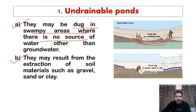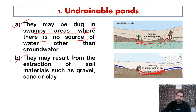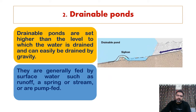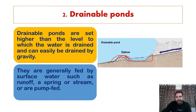The second category of undrainable ponds results from the extraction of soil materials such as gravel, sand, or clay — extracting these materials renders the pond undrainable with no drainage left. The second main drainage category is drainable ponds. Drainable ponds are set higher than the level to which water is drained, so we can drain or siphon the water easily by gravity.